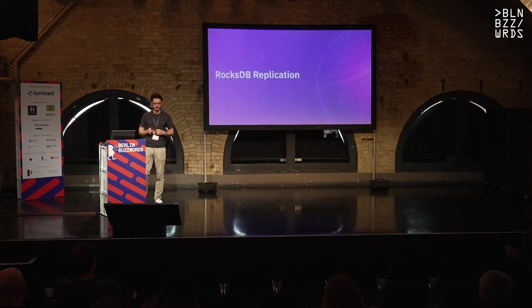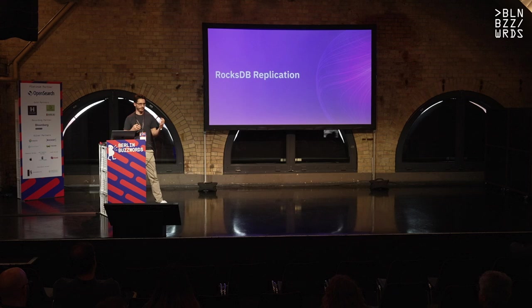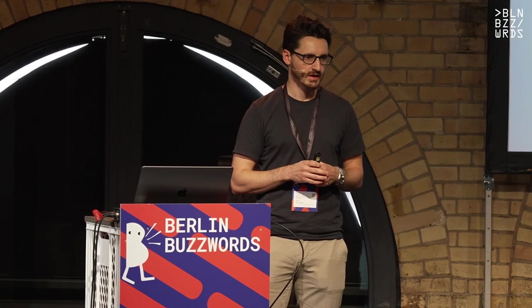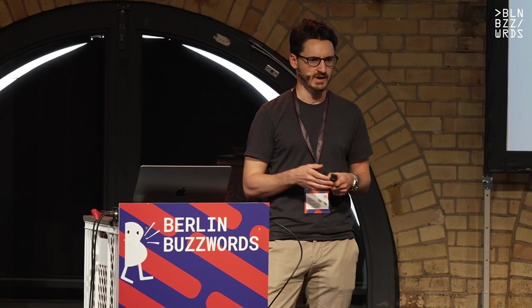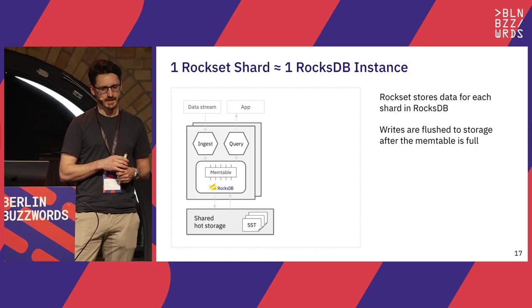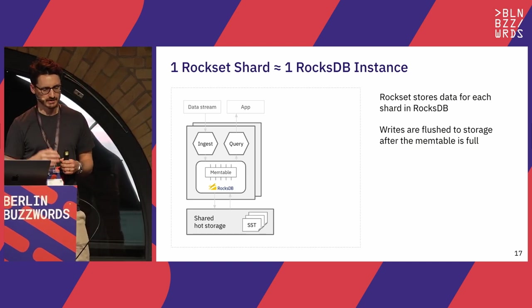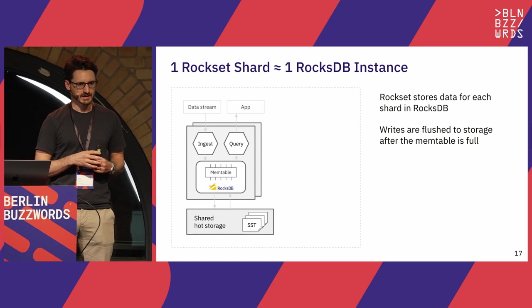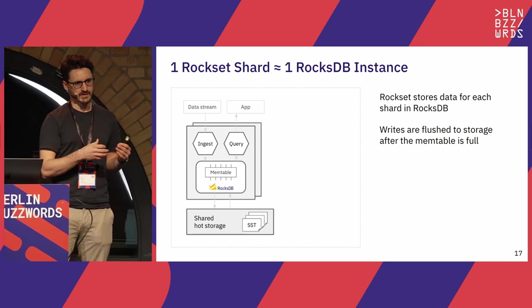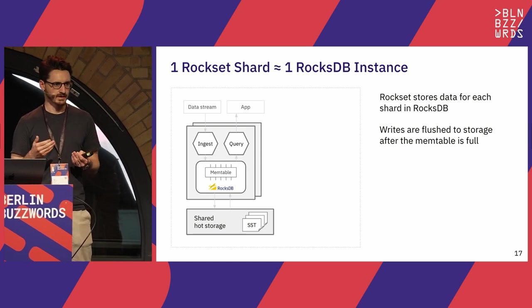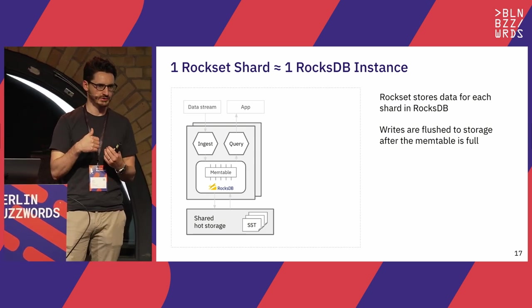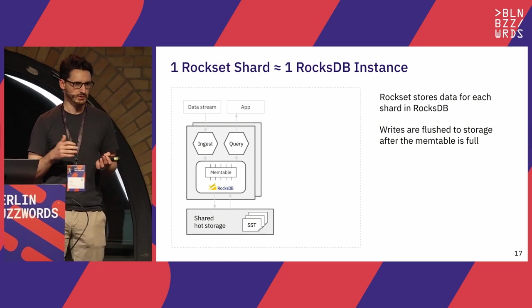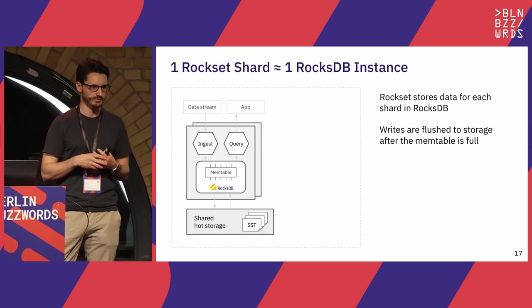Now let's talk about RocksDB replication — the underpinning of our isolation between query and ingest compute. In Rockset's world, one Rockset shard is one RocksDB instance. We have many RocksDB instances within a single process. RocksDB is fairly lightweight, so we can do that. Recent writes come into the memtable — an in-memory write buffer. When the memtable is full, it's flushed to disk. After flushing, the file is immutable and never changes. The only thing that can happen to the file is deletion as part of the compaction process.